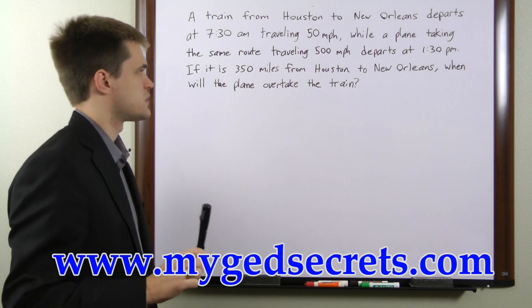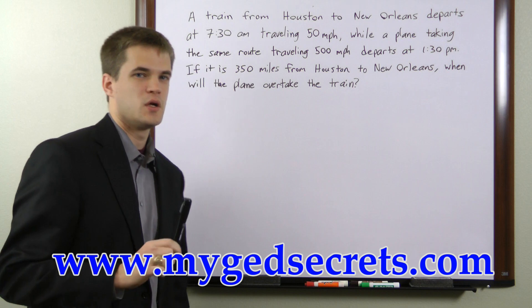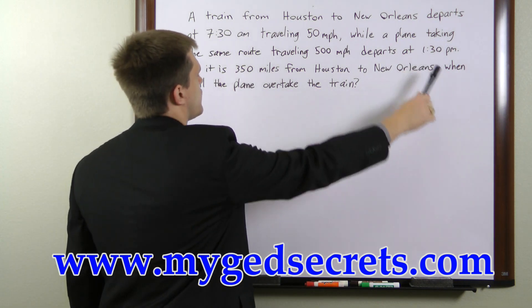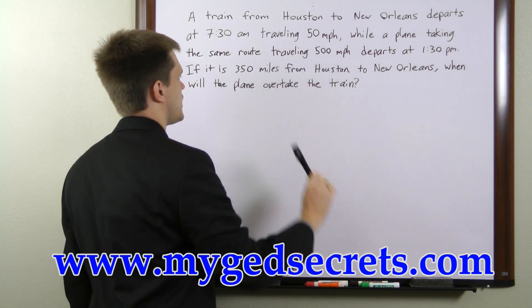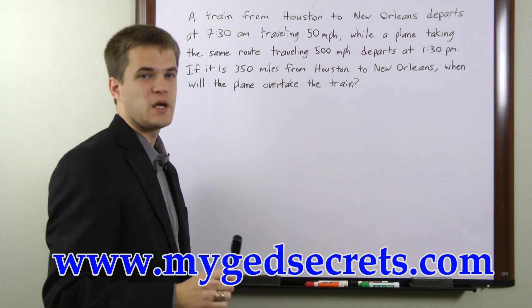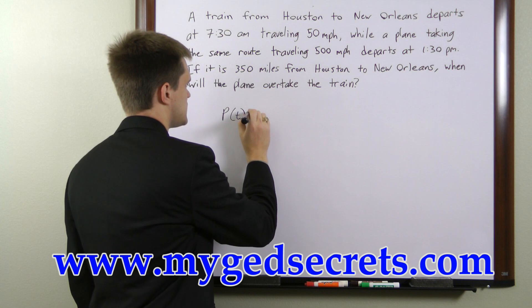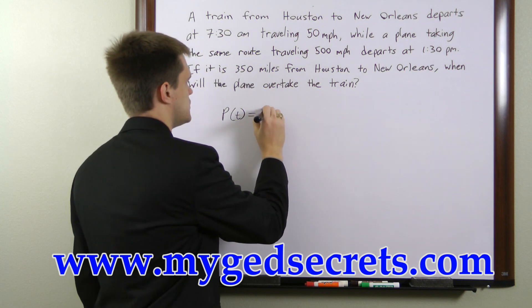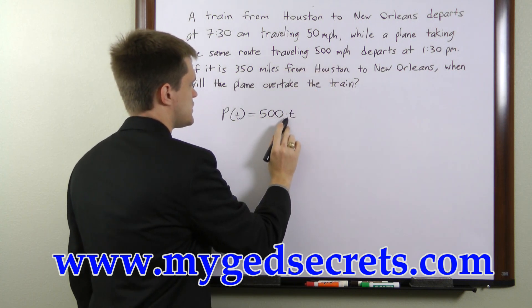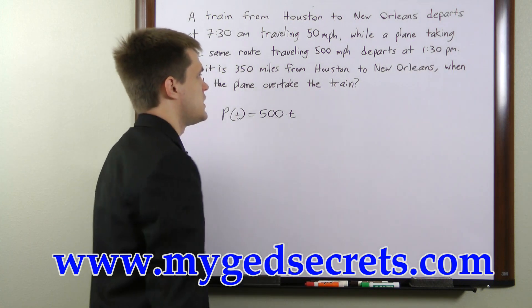The first thing we want to do is write equations of motion for both the plane and the train. Let's start with the plane. The plane departs at 1:30 p.m. traveling 500 miles an hour. So our equation of motion for the plane is the position at time t is equal to 500 times t. So t is going to be measured in hours, starting at 1:30 p.m.